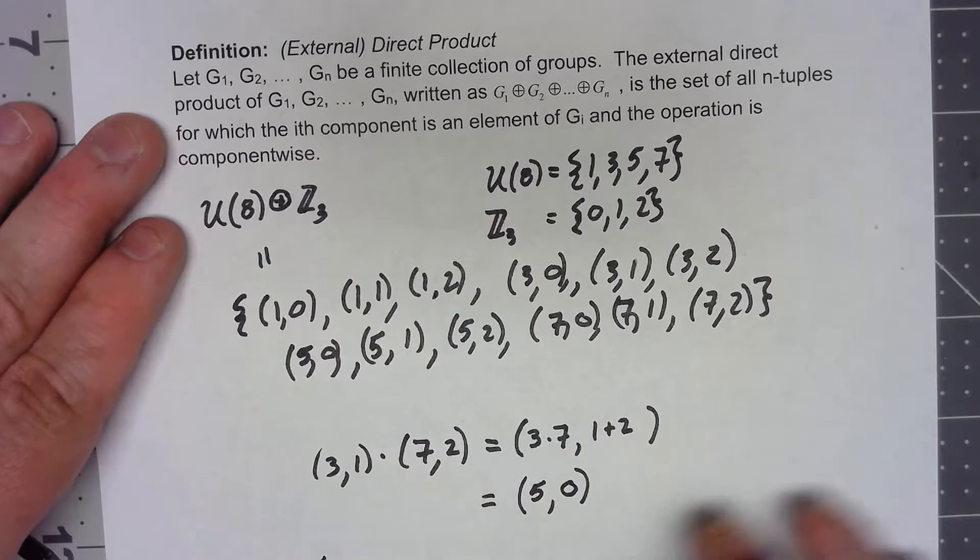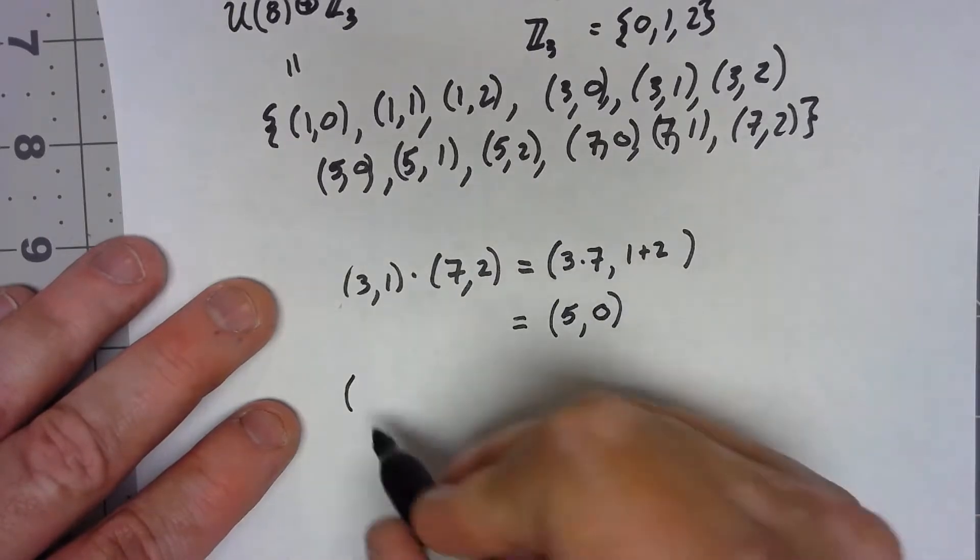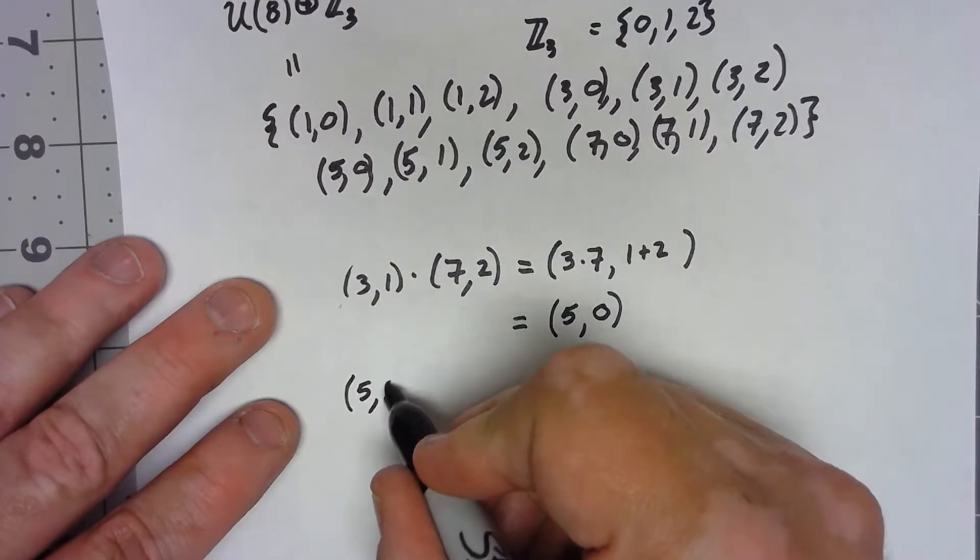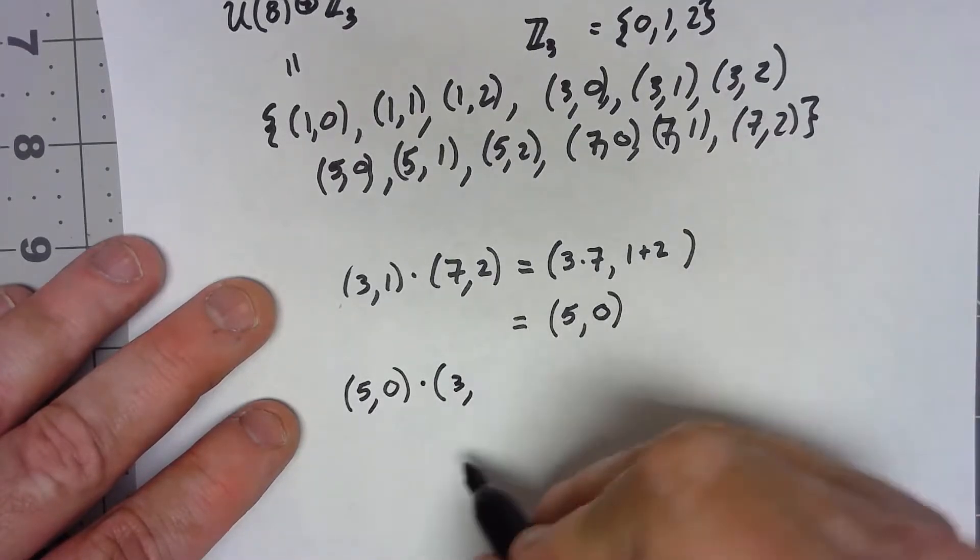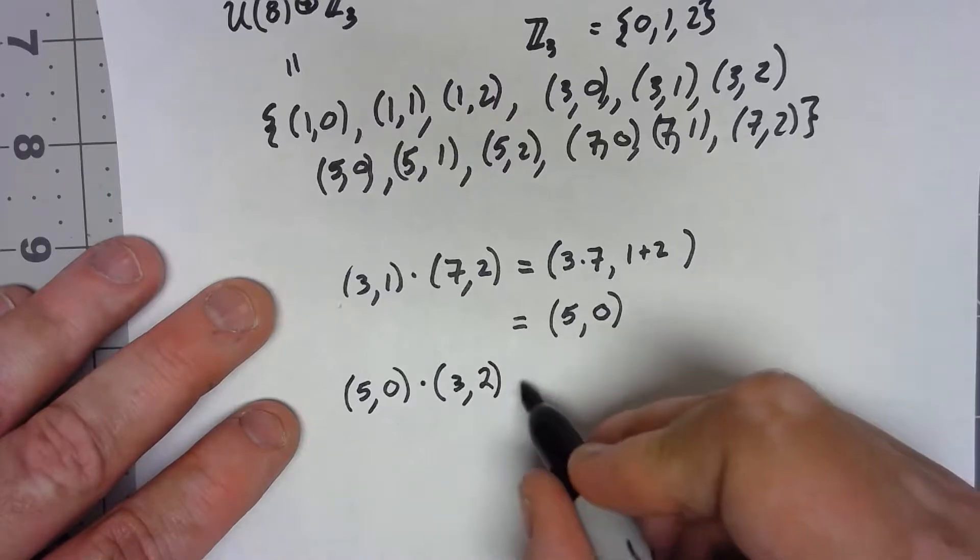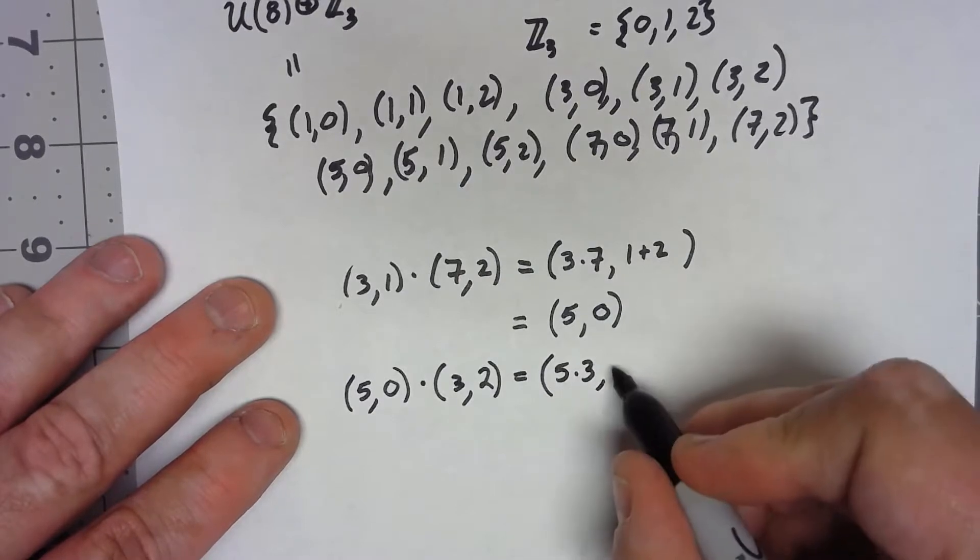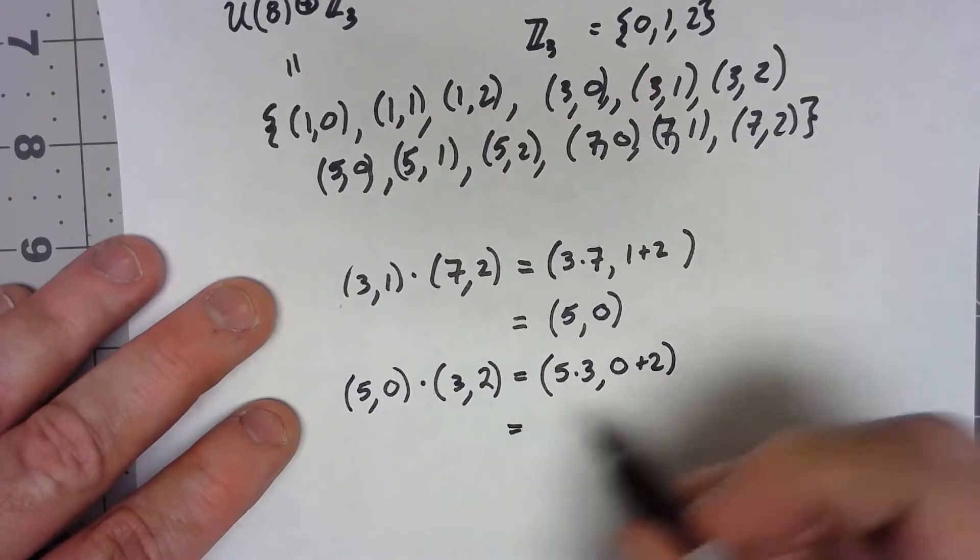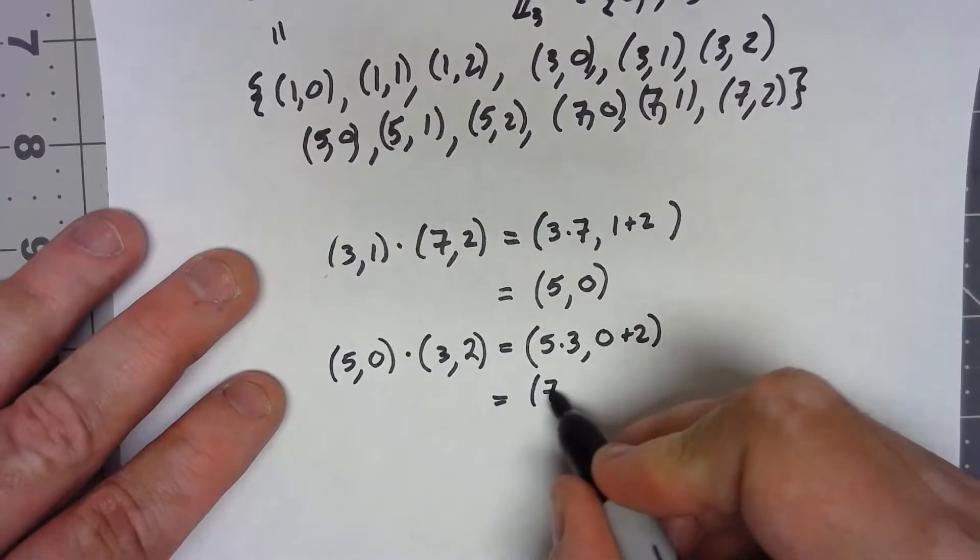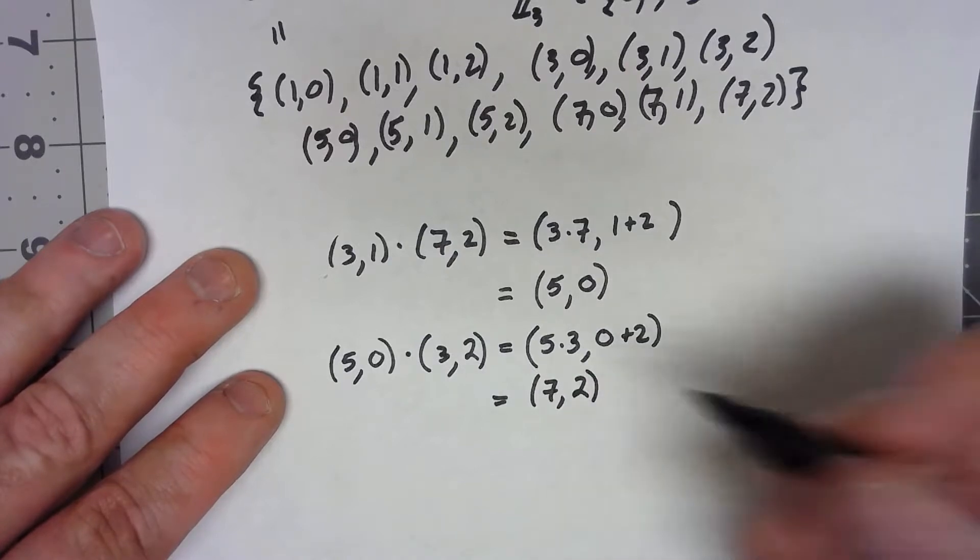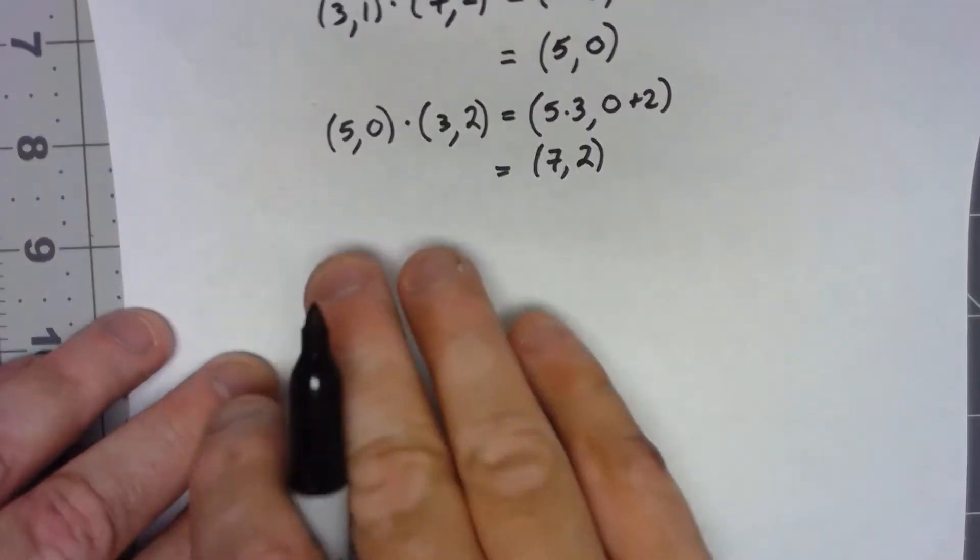Let's do another example. Let's say I had something like (5,0) and I want to do that times (3,2). So I'm going to do 5 times 3 and 0 plus 2. 15 mod 8, because we're in U(8), would be 7. 0 plus 2 is 2, mod 3 is still 2.